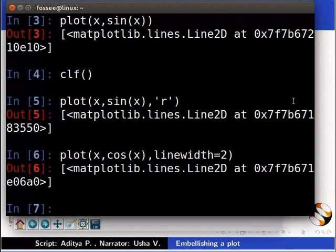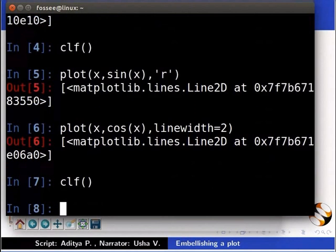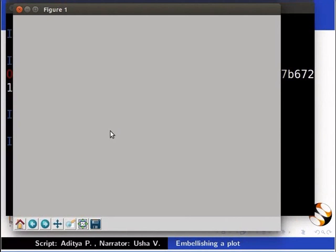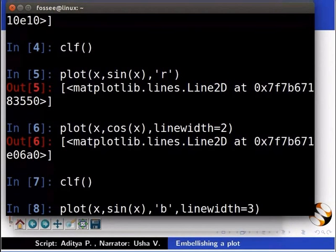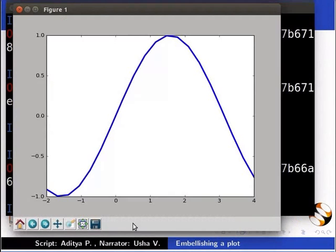Let us now try to plot a sine curve in blue color with line width as 3. Here onwards, press the enter key to execute every command that we type on the IPython console. Let us first clear the plot window by typing clf. You will again see a blank plot window. Now type plot inside the brackets x comma sin x comma inside inverted commas b comma linewidth is equal to 3. A combination of color and line width would do the job for us.